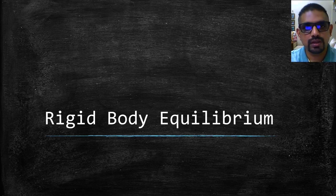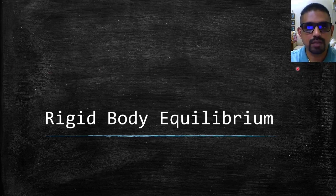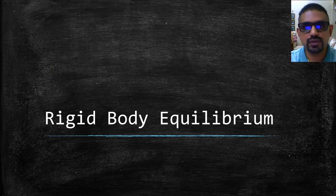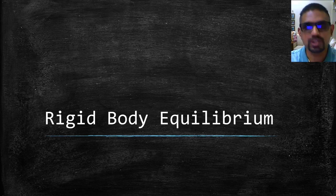When the force and couple are both equal to zero, the external forces form a system equivalent to zero and the rigid body is said to be in equilibrium.